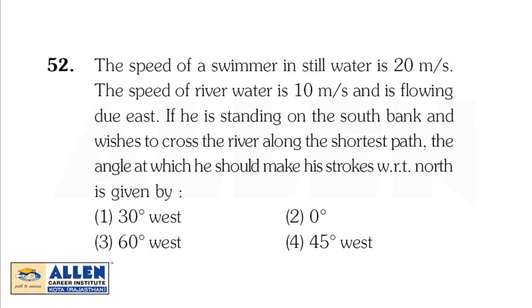Hello students, now we are going to discuss question number 52 and the paper code is P2. The question is: the speed of a swimmer in still water is 20 meter per second, the speed of river water is 10 meter per second and is flowing due east. If he is standing on the south bank and wishes to cross the river along the shortest path, the angle at which he should make his strokes with respect to north is given by.